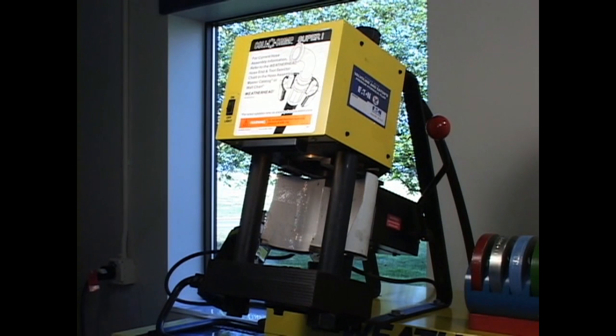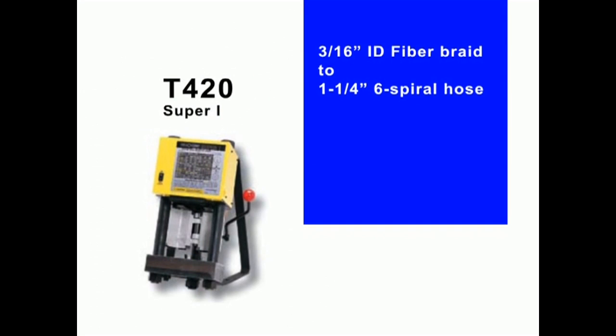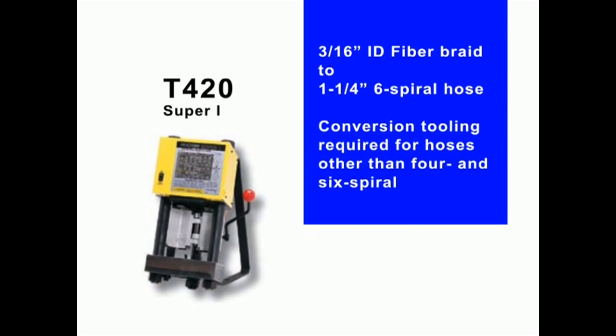The T-420 ColoCrimp Super 1 offers crimping capabilities ranging from 3/16 inch ID fiber braid through 1 and 1/4 inch, 6 spiral hose. For hoses other than 4 and 6 spiral, conversion tooling is required. See the Eaton Weatherhead Master Catalog for details.